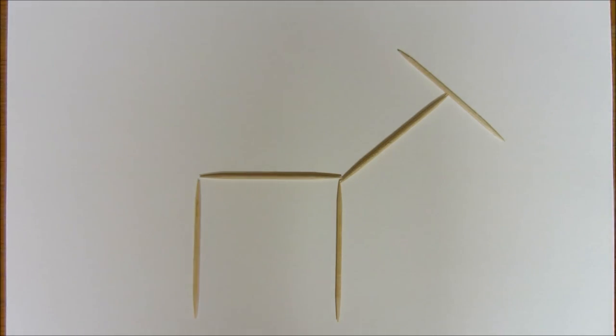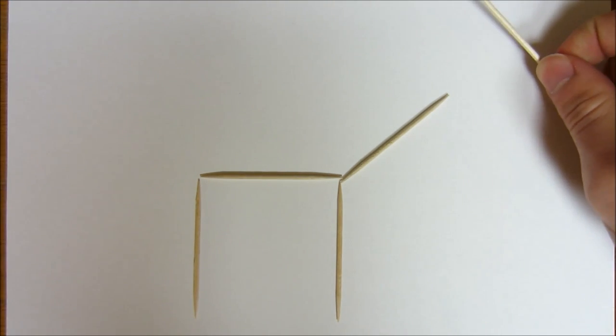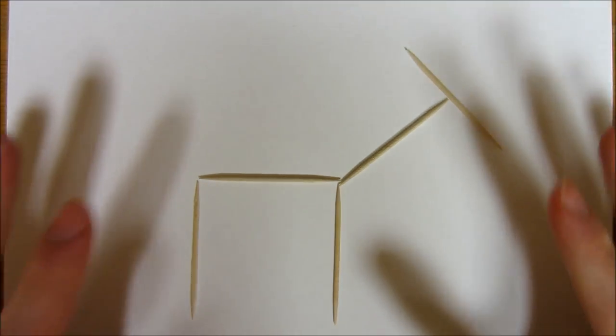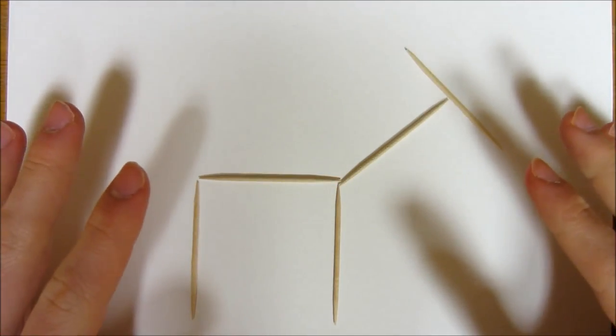The goal of the puzzle is to move one toothpick so that you still have a giraffe, but a different giraffe. You have to take one toothpick and place it somewhere so that the general shape is the same, but it's in a different position - the giraffe's in a different position.